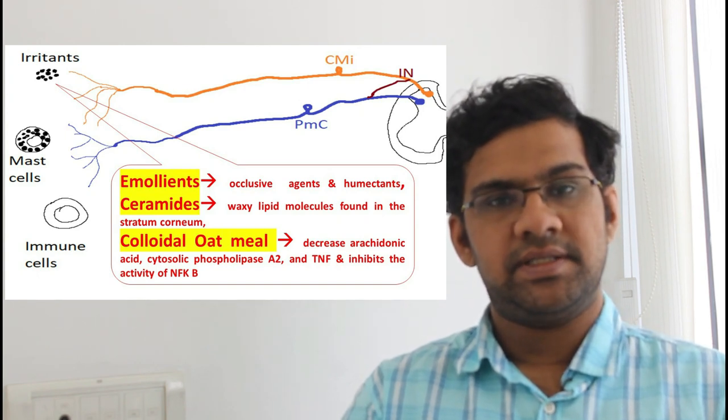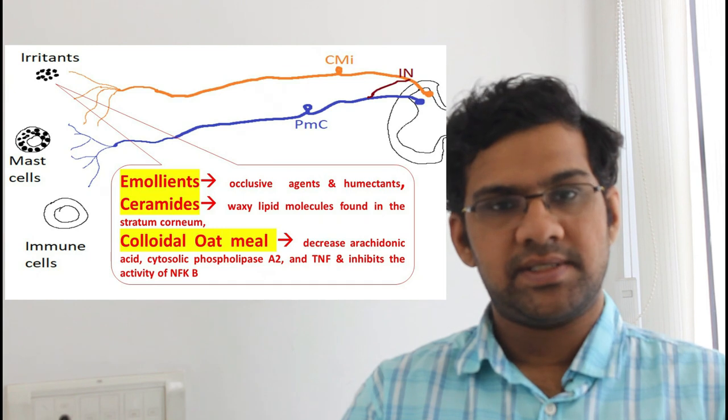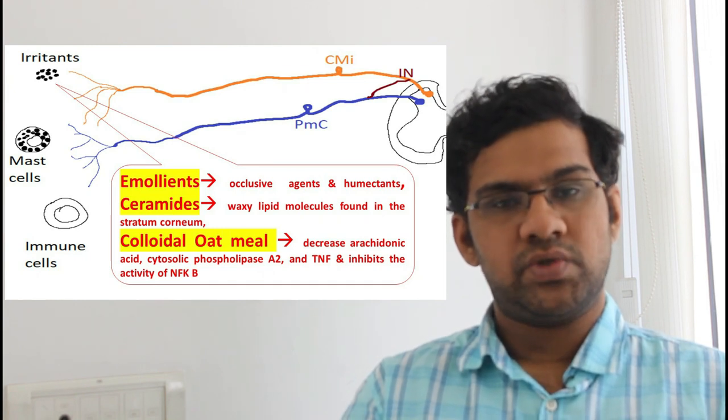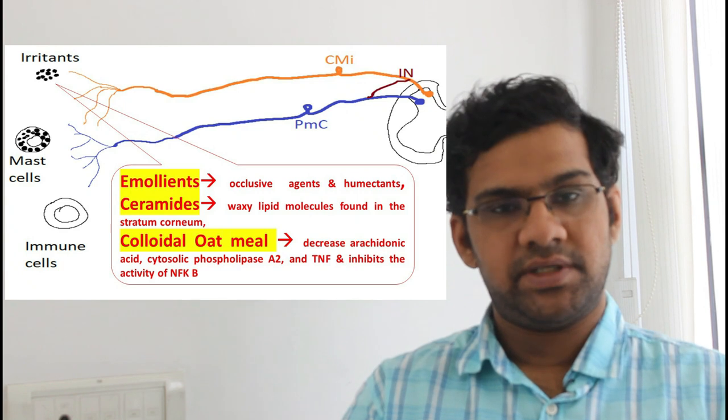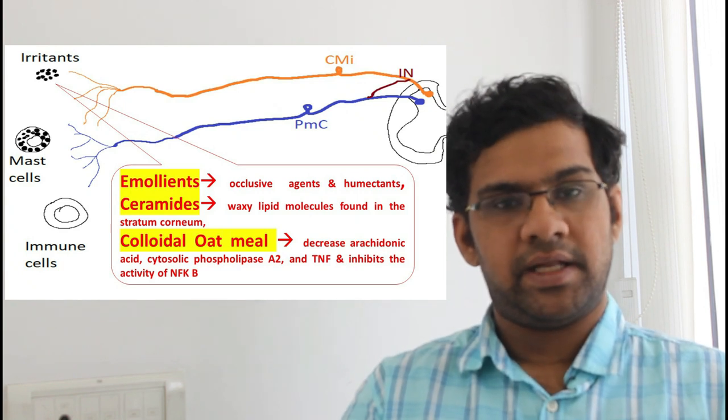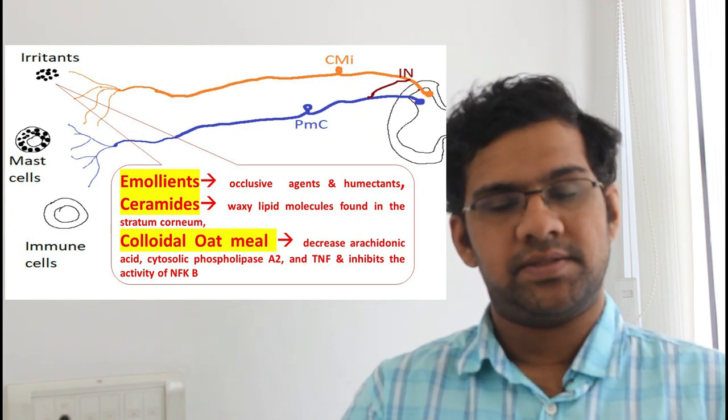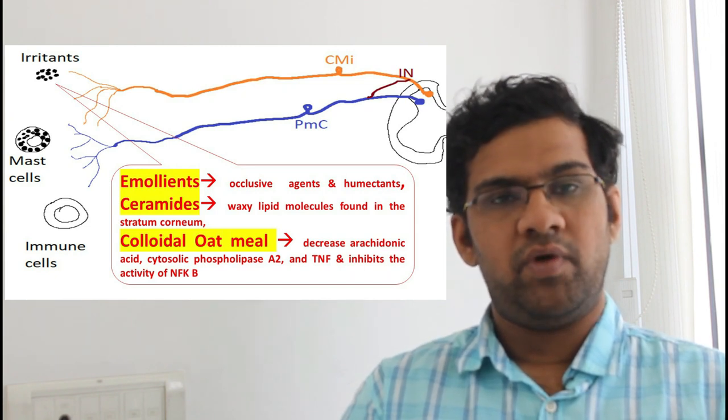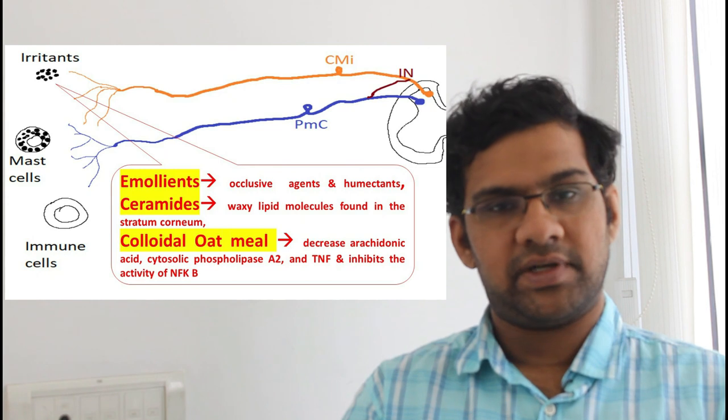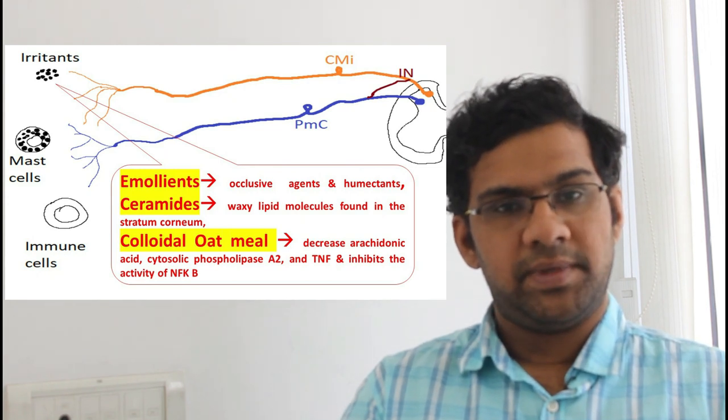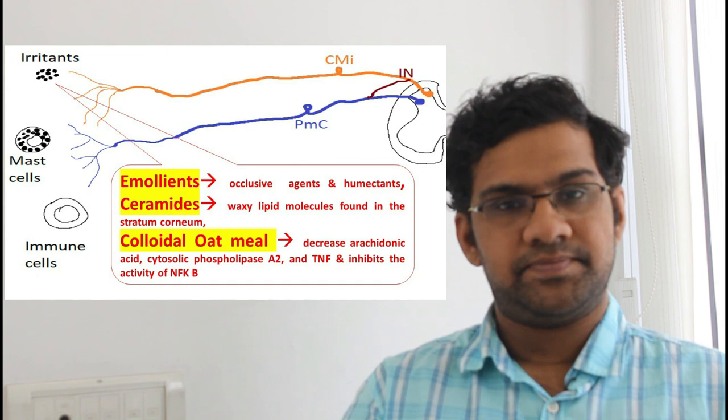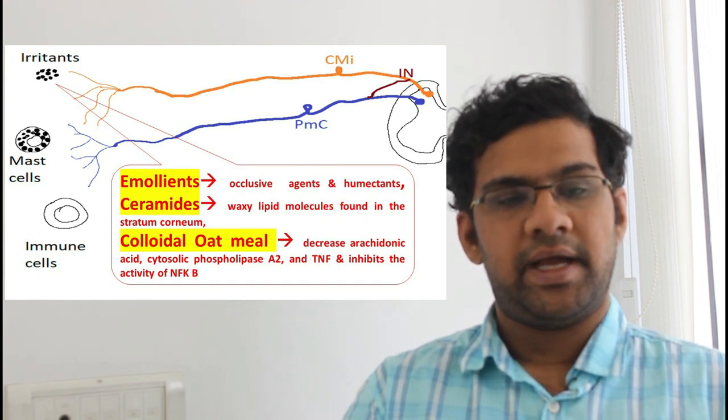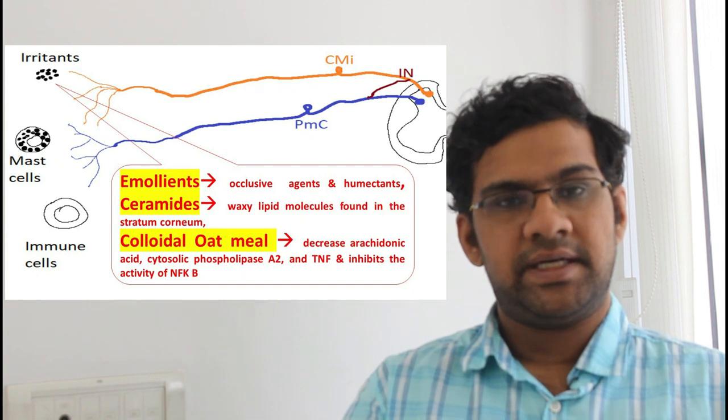Coming to ceramide-containing emollients, ceramide is a substance which is made up of lipids that is present between the keratinocytes in the epidermis. So in people who are deficient with ceramide, like in cases of atopic dermatitis, usage of ceramide-containing emollients will help in maintaining the barrier function. Coming to colloidal oatmeal, substances help in calming the skin. They decrease the production of inflammatory and molecular signals that trigger the itch signaling.